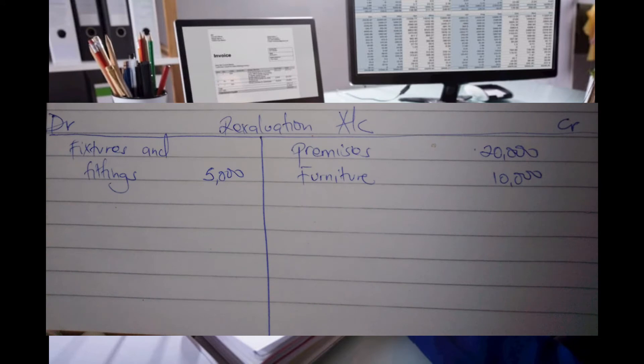In the case of fixtures and fittings, they told us that fixtures and fittings were revalued from 25,000 to 20,000, so there was a decrease in value. Fixtures and fittings are also non-current assets. In case of a decrease in the value of an asset, we debit the revaluation account and credit the individual asset account. Fixtures and fittings reduced in value by 5,000, so we debit the revaluation account with fixtures and fittings for 5,000. Those were the only three assets revalued.